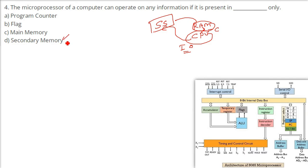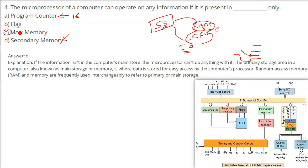The other options: the program counter is a 16-bit register; flags just indicate what arithmetic or logical operation has happened. Secondary memory is not directly tracked by the CPU — main memory is the key. If information has to be processed, it must be in primary storage; the processor won't access it from secondary storage.